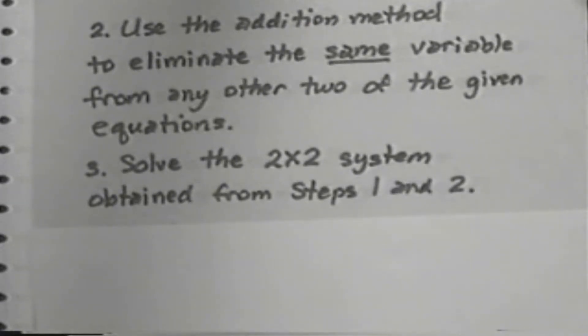In Step 2, we eliminated the same variable we had done before, that is an x perhaps, leaving us another equation with y and z. And so that gives us two equations with the same two letters, y and z. So we solve that 2x2 system obtained from Steps 1 and 2.